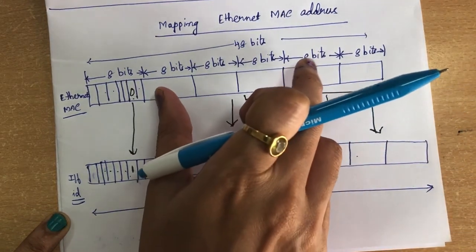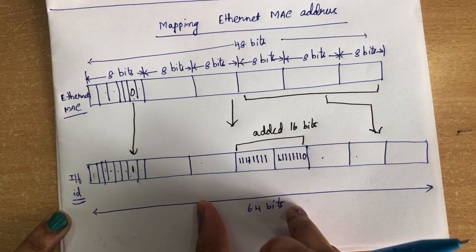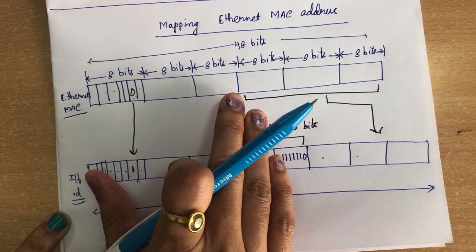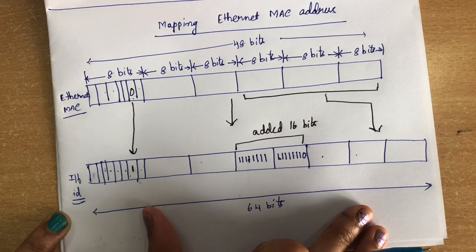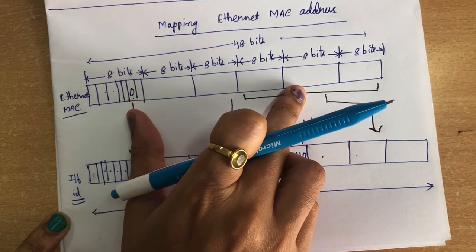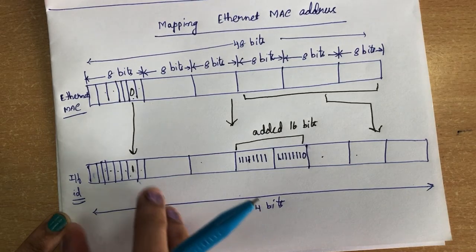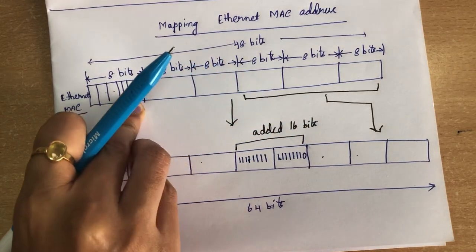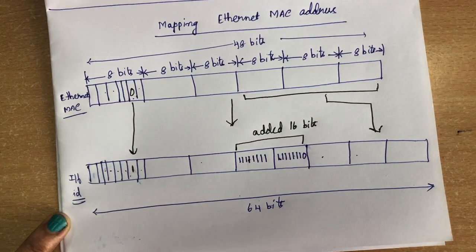A MAC address is uniquely assigned worldwide. When mapping it to an IPv6 address — which requires 64 bits for the interface identifier versus the MAC's 48 bits — you need to do two things: add the additional 16 bits (15 ones followed by a zero) after the first three blocks, and complement the seventh bit of the first byte from zero to one. This is how a MAC address is mapped to an IPv6 address.